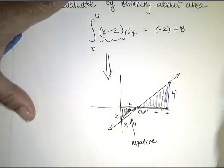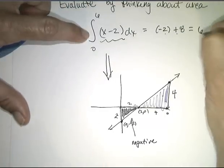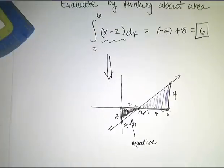So, plus eight. So, the value of this integral is negative two, plus eight, which equals six. Which is not the area under the curve. Correct?